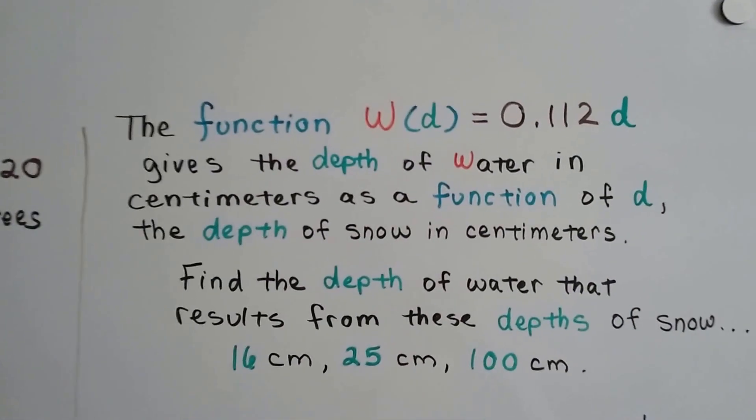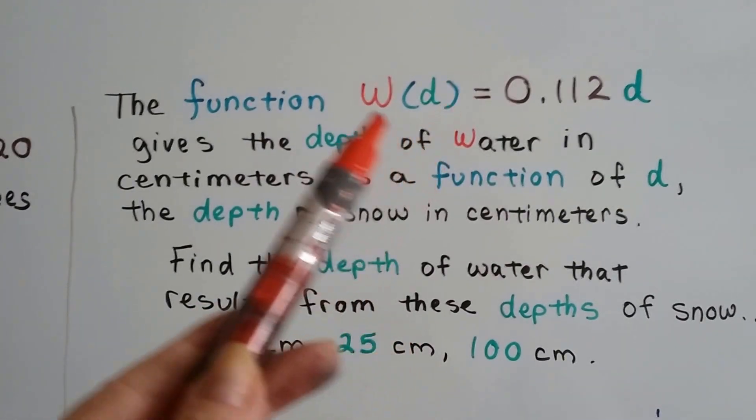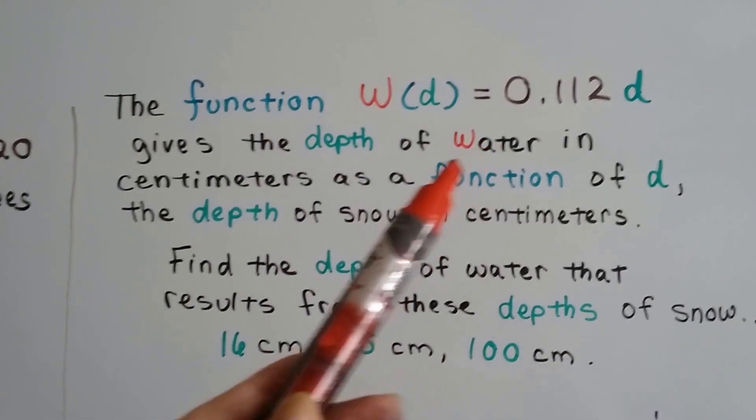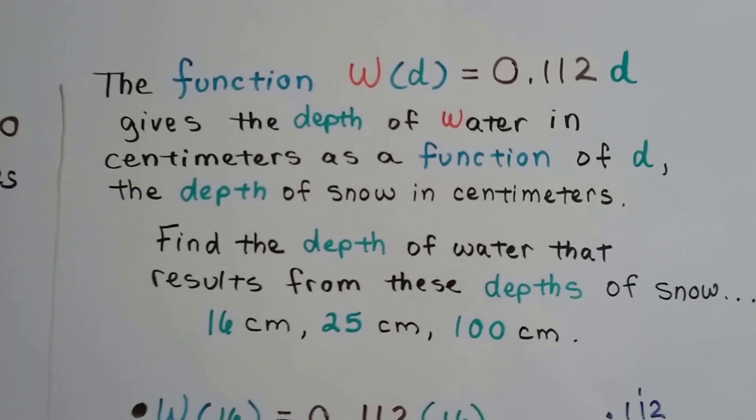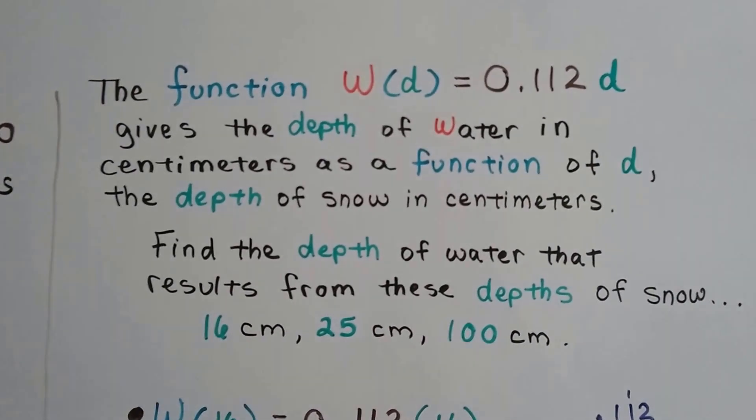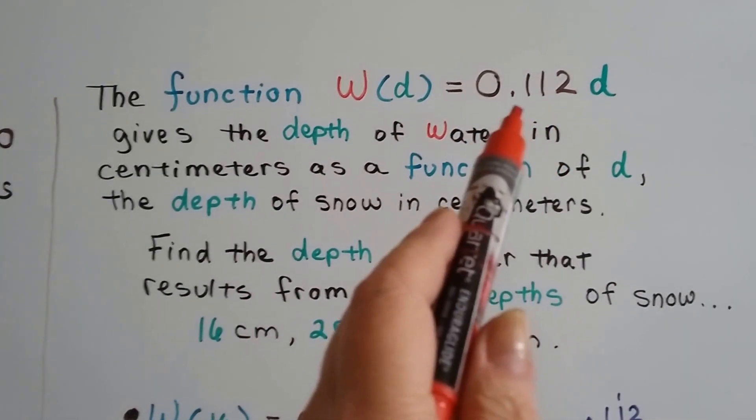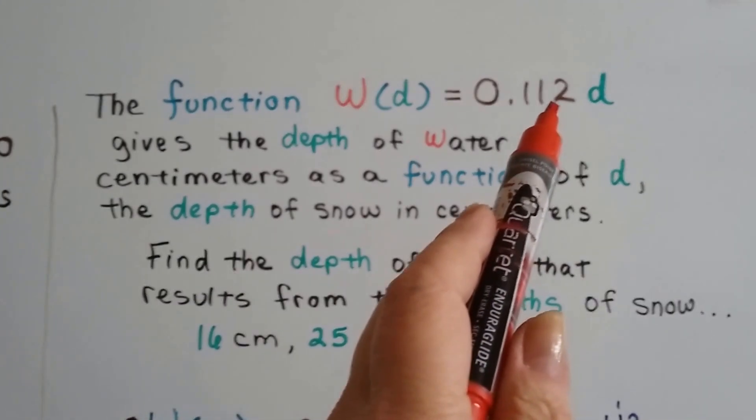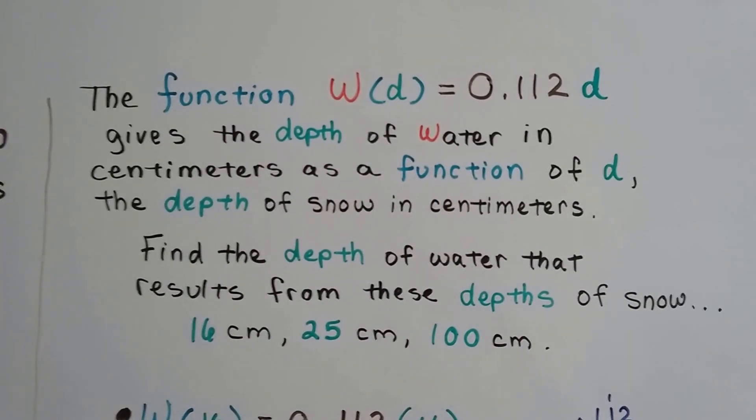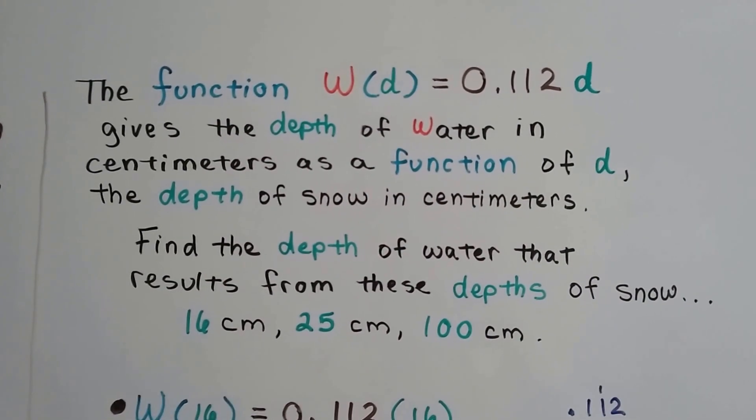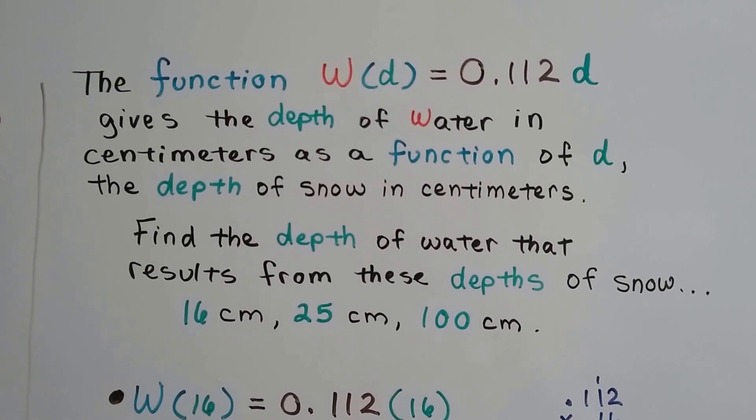Look at this one. Now we've got w and d, but you can see where they came from - water and depth. The function W(d) = 0.112d, that's 112 thousandths times d, gives the depth of water in centimeters as a function of d, the depth of snow in centimeters.